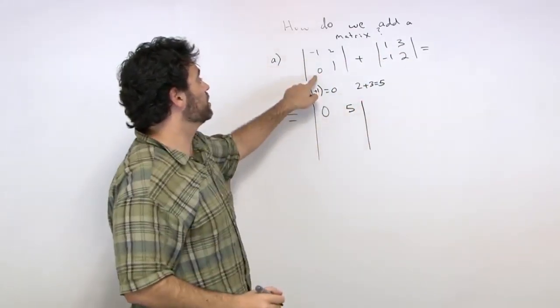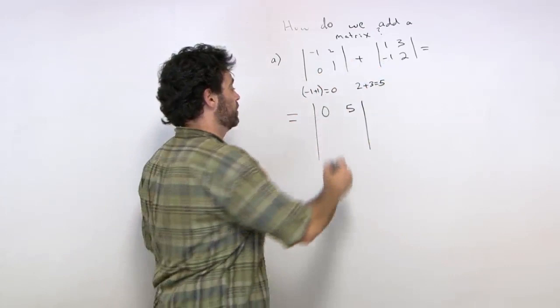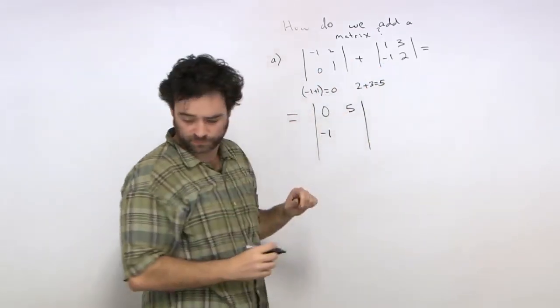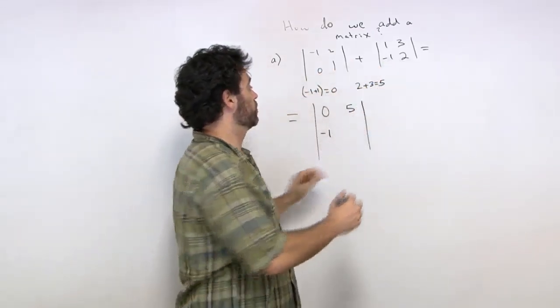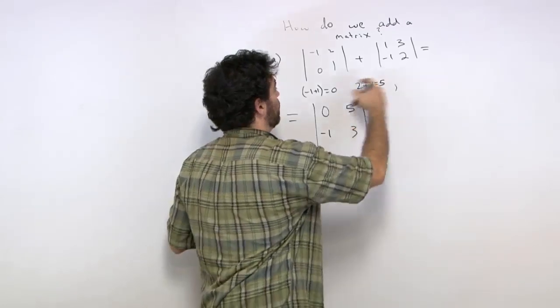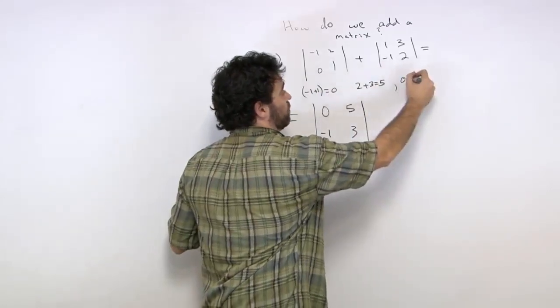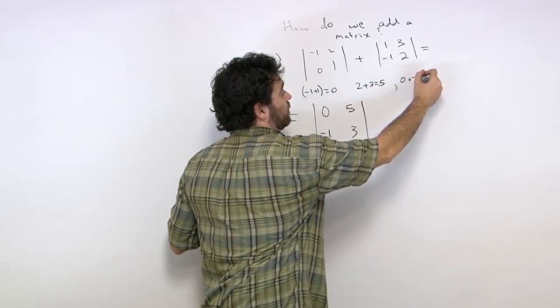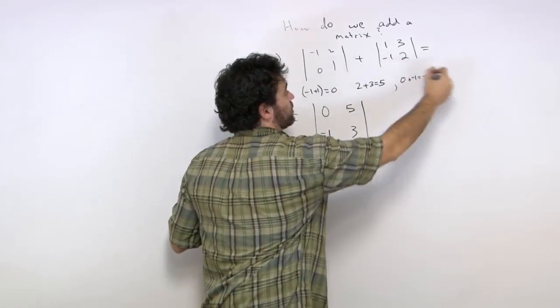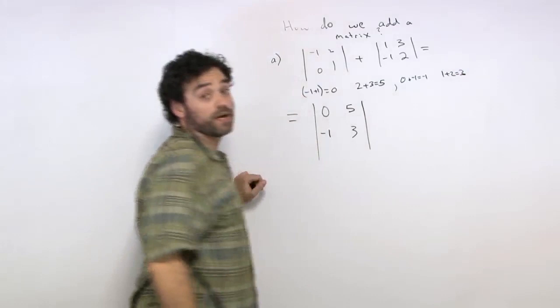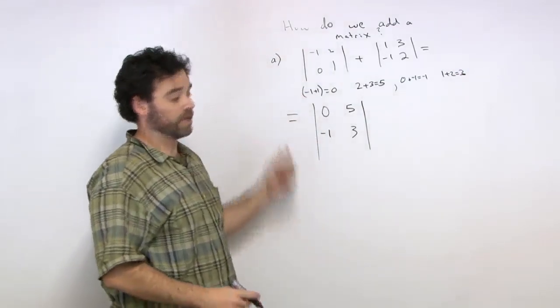Okay, 0 plus negative 1 is negative 1. And then finally 1 plus 2 is 3. So there's our four entries: 0, 5, negative 1, and 3. Right? So there is our new matrix.